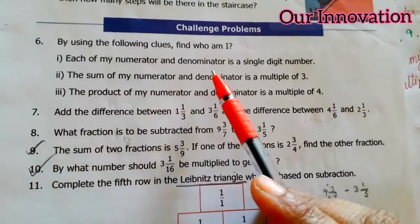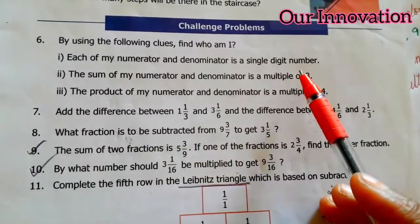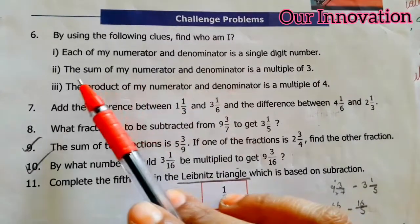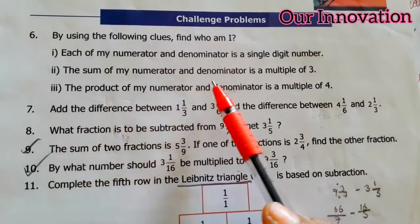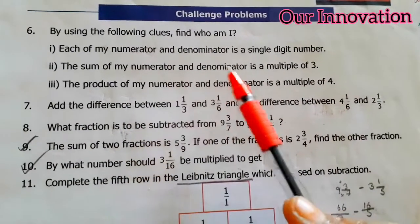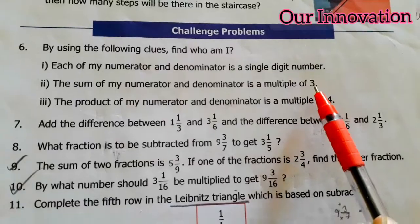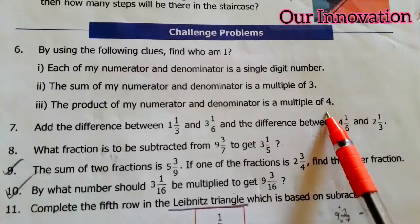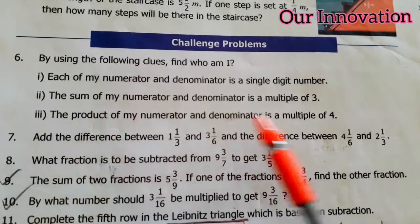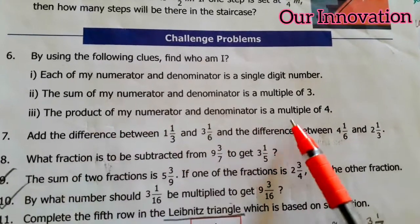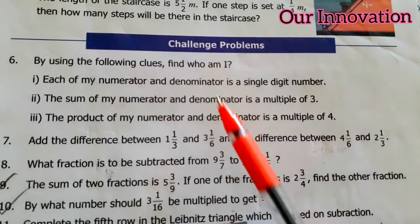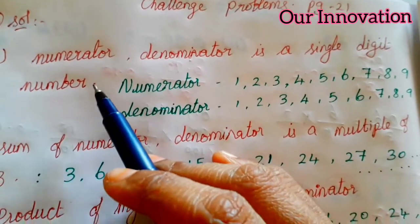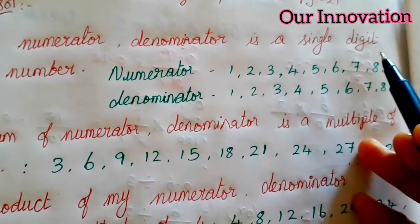Each of my numerator and denominator is a single digit number. So numerator and denominator is a multiple of 4. The sum is a multiple of 3, and the product is a multiple of 4. So in the 3 clues, you can use fractions. Students, first clue is: numerator and denominator is a single digit number.